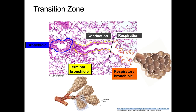Distal to the respiratory bronchioles are the alveolar ducts, which end in air sacs called the alveoli. Alveoli are bunched together into clusters to form alveolar sacs. Gas exchange occurs on the surface of each alveolus by a network of capillaries carrying blood that has come through veins from other parts of the body.